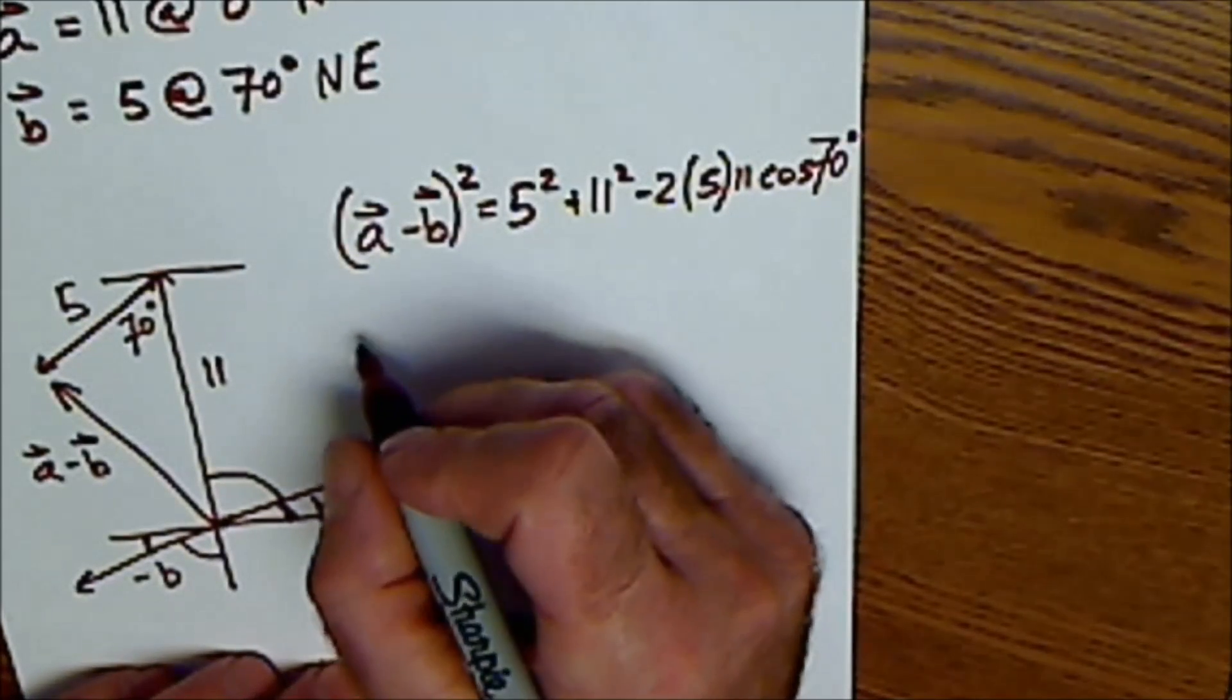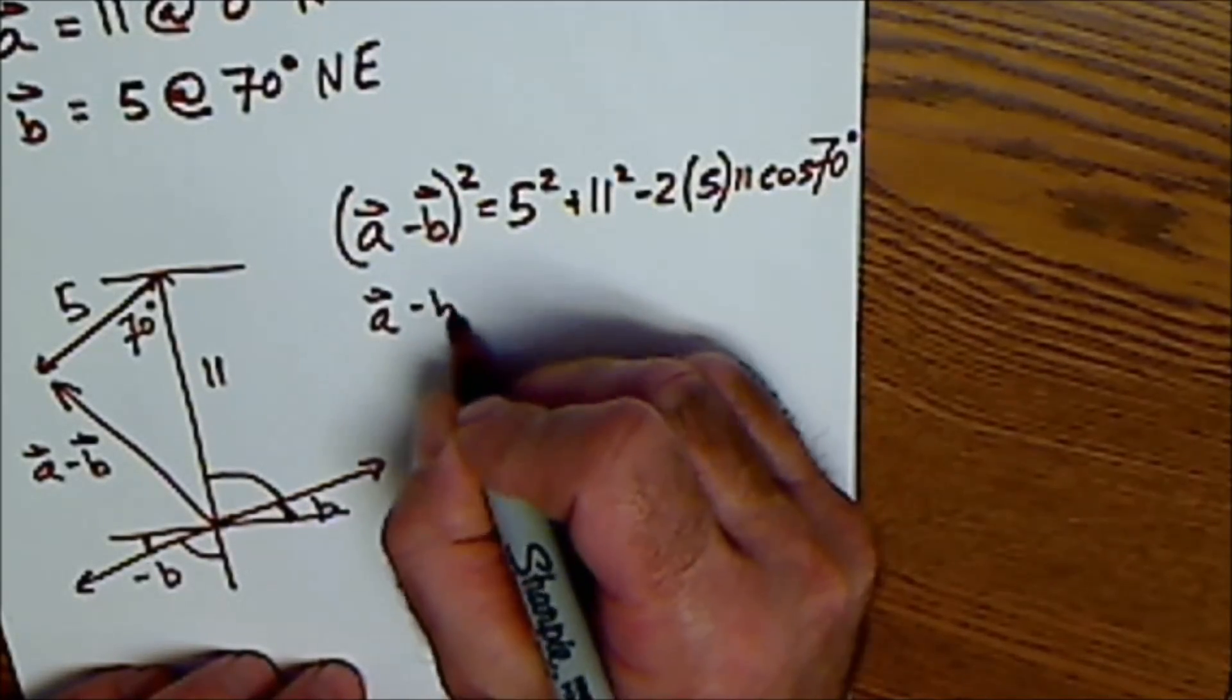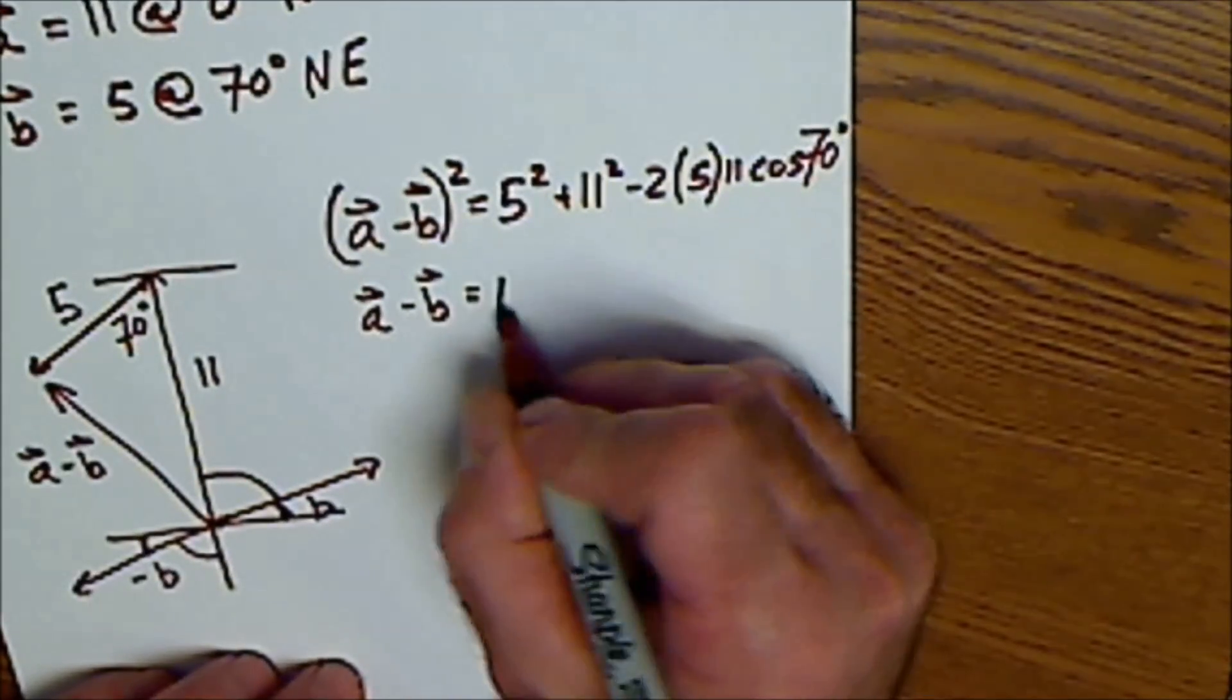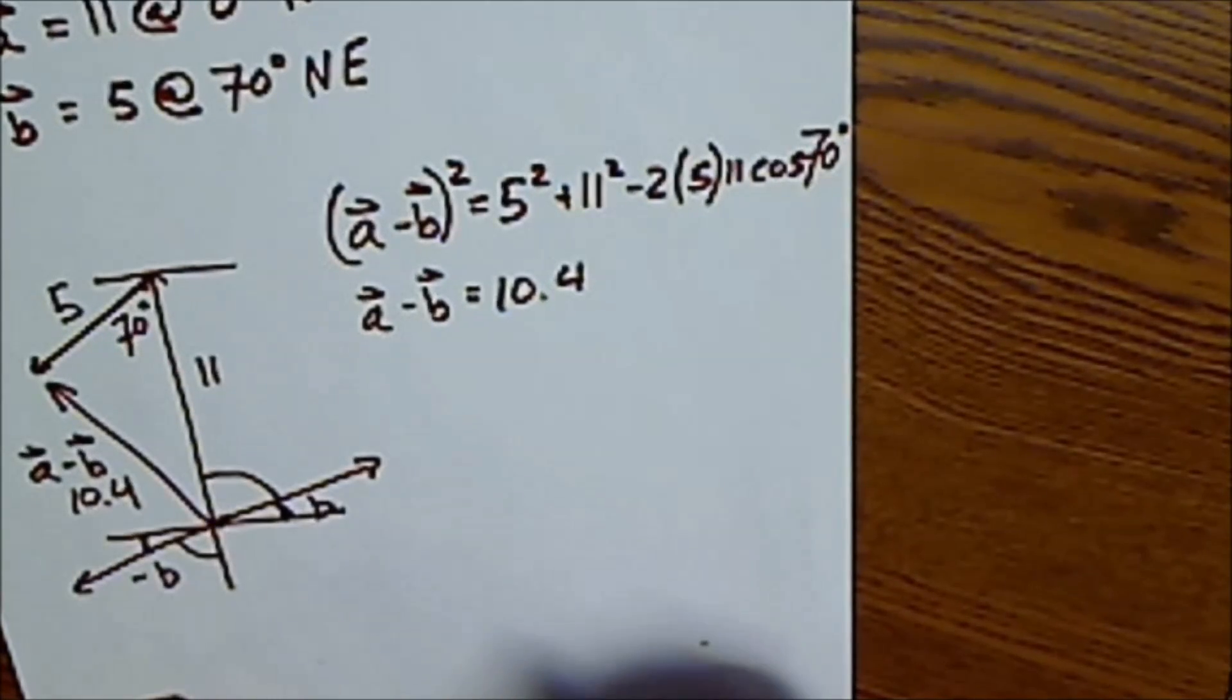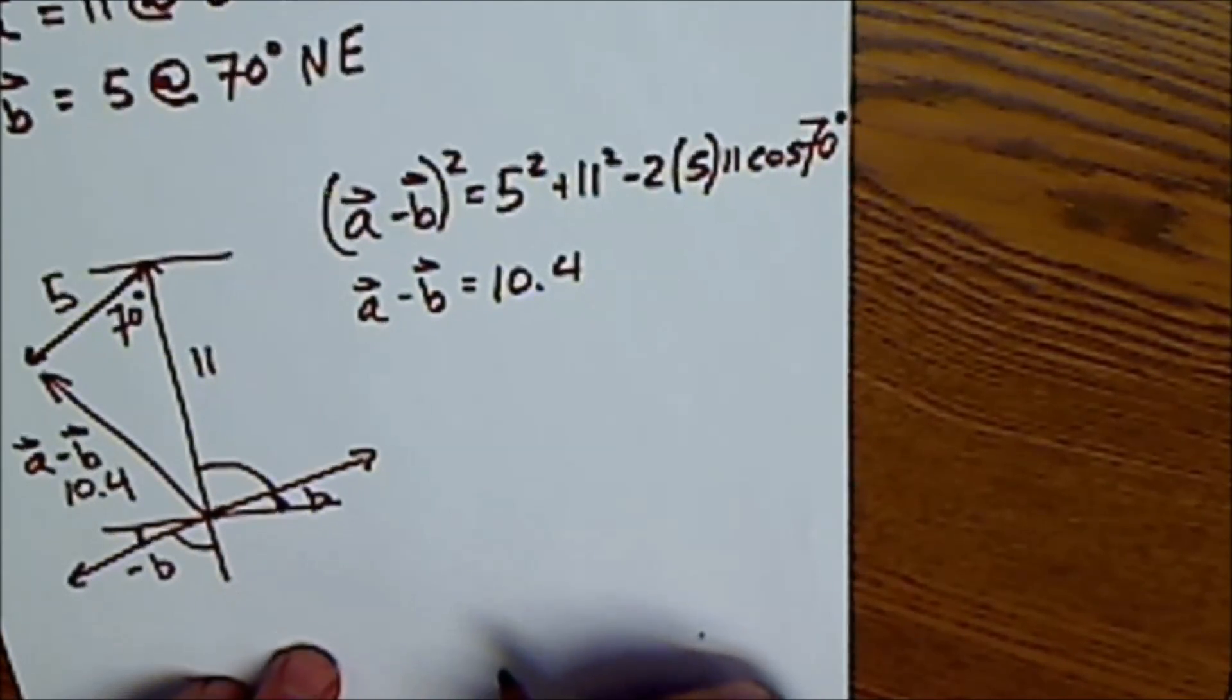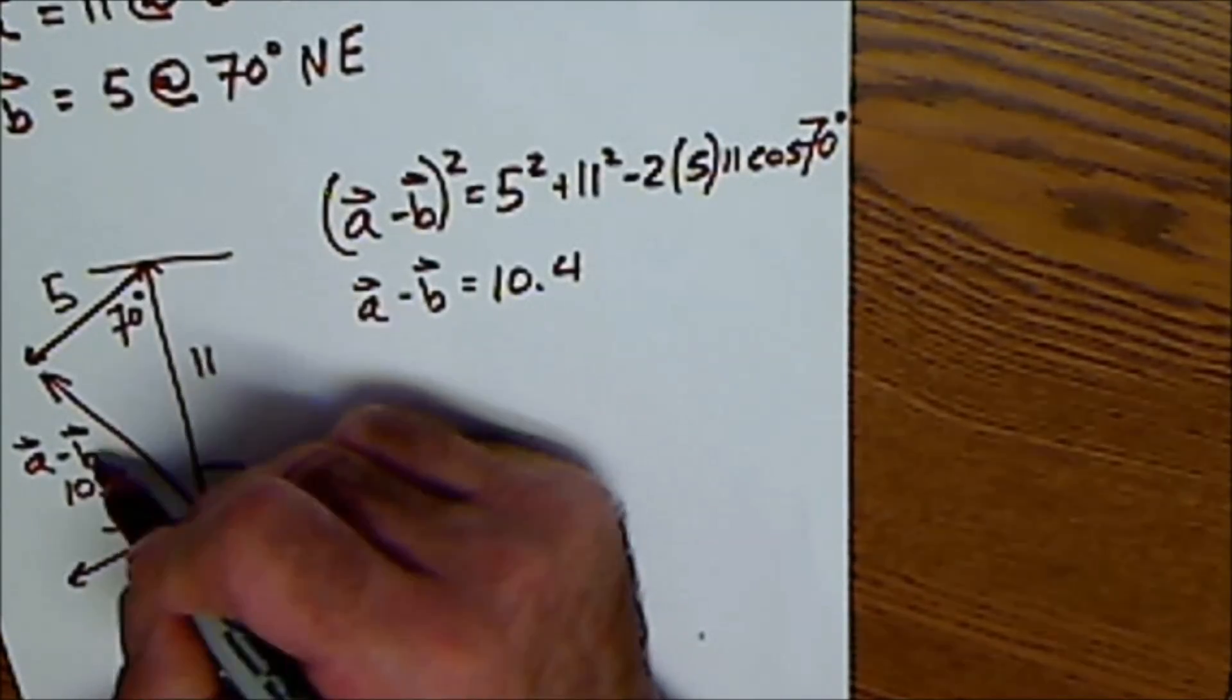So A minus B, vector A minus vector B is equal to 10.4. So this is 10.4 units long. And that looks right for this opposite 70 degrees.